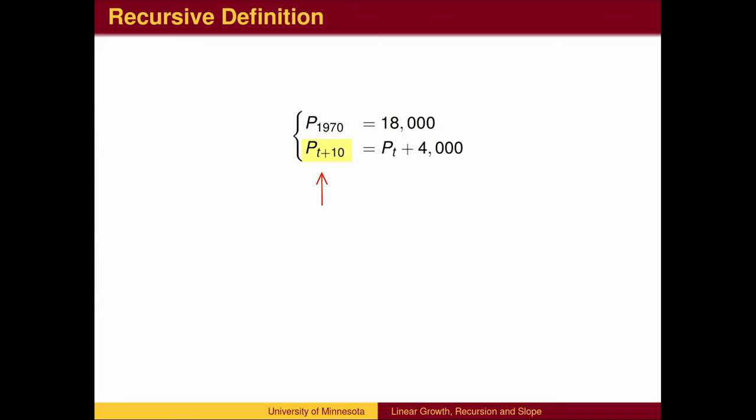On the left hand side, the subscript is t plus 10, and on the right hand side, the subscript is t. This equation tells us how to use the population at a certain time t to calculate the population 10 years later at time t plus 10.